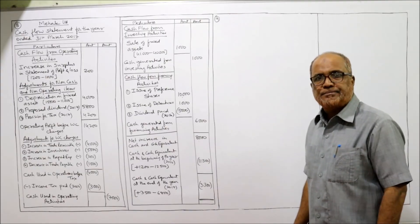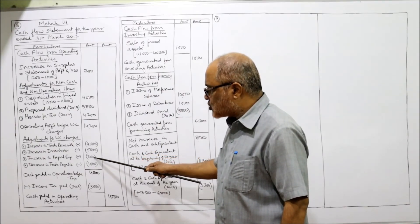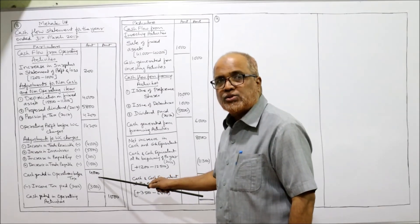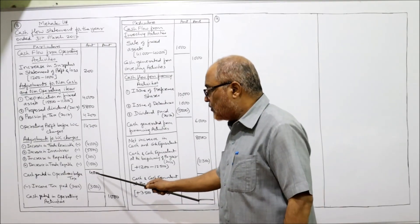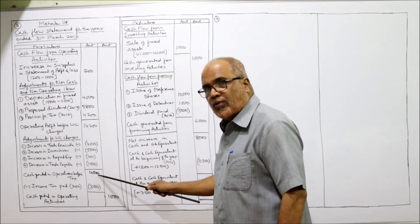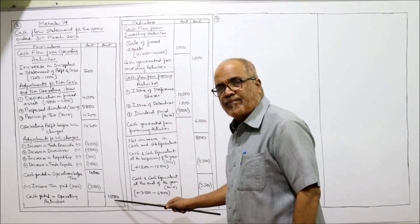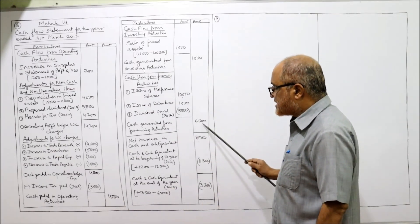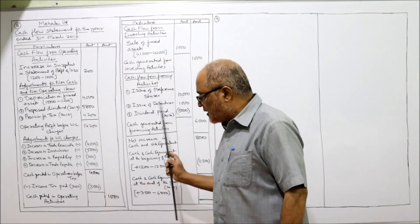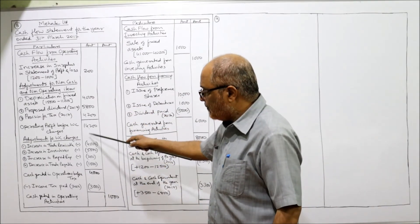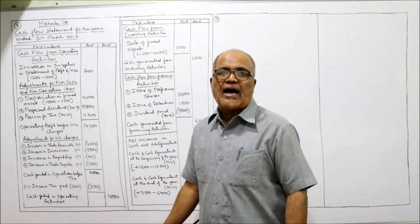This is the end of problem number eight. A small correction: 14,200 minus 4,000 minus 5,000 minus 200 minus 1,000 gives positive 4,000 — not minus 4,000 as I mistakenly wrote earlier. So cash generated in operations before tax is 4,000. Minus income tax paid 3,000 gives cash generated from operating activities of positive 1,000. So 1,000 plus 1,000 plus 6,000 equals 8,000 — the calculations are now correct.